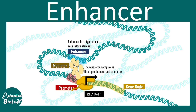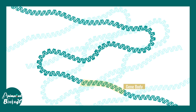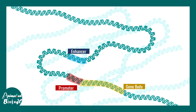In this video we'll be talking about the concepts behind enhancers and eukaryotic gene expression regulation. An enhancer is also a DNA sequence that could be present in an upstream or a downstream location — in this case it is downstream with respect to the promoter or the transcription start site.